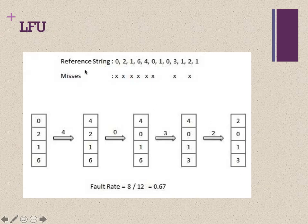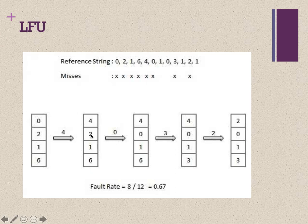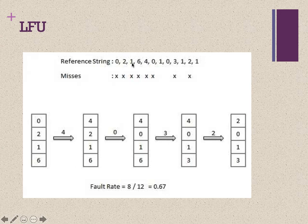This illustrates the LFU (Least Frequently Used) technique. Say we have data 0, 2, 1, 6 in the cache and we need data 4. Since 0 was least frequently used, we replace 0 with 4. Then when 0 is needed again, 2 becomes least frequently used so we replace 2 with 0. Then 3 arrives and replaces 6, because 1 was recently used.